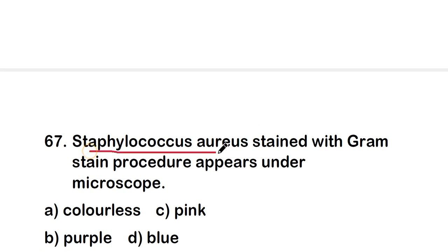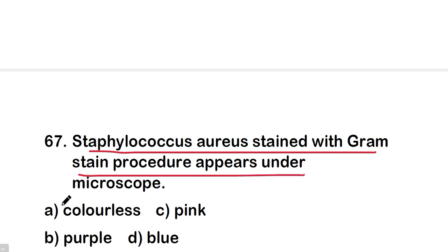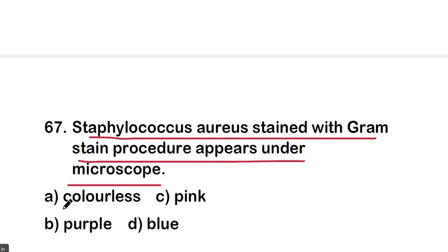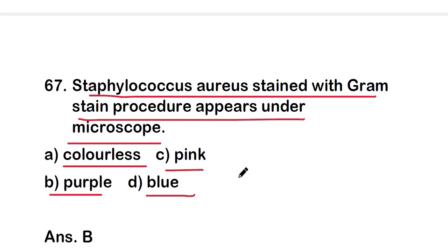Next question: Staphylococcus aureus stained with the gram stain procedure appears under microscope as which color — colorless, purple, pink, or blue? The right answer is option B — purple. Staphylococcus aureus is gram-positive and gives a purple color during gram staining.